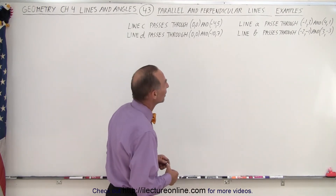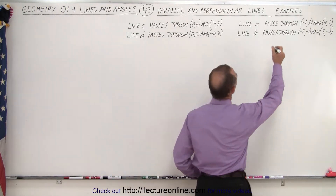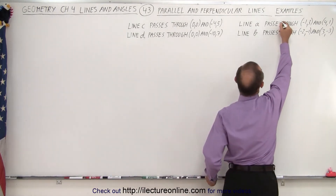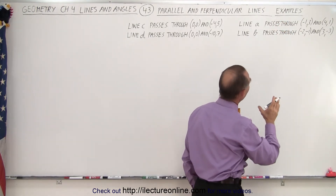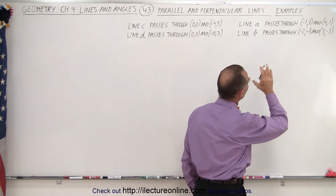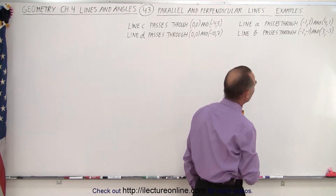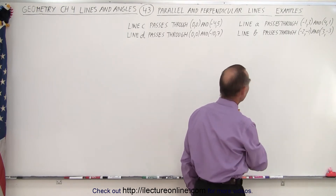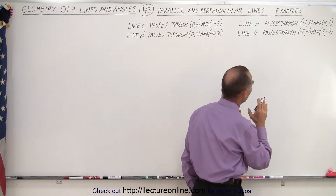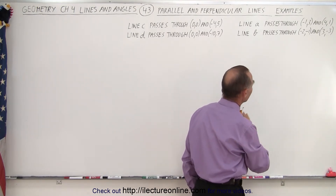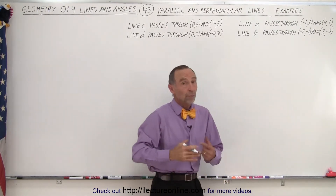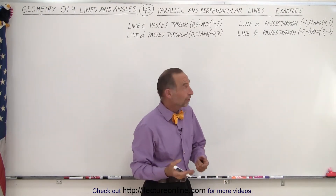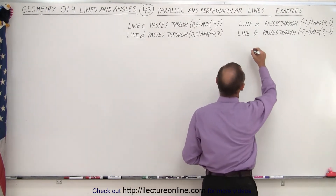Line A passes through points negative 1 and 3, and 4 and 1. Line B passes through points negative 2, negative 1 and 3, negative 3. So what we should do first is find the slopes of each.